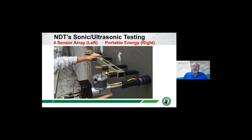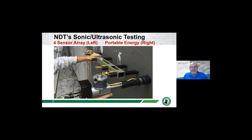NDT has sonic-ultrasonic equipment comprised of a portable energy source—an air gun that fires a special steel bearing hooked up to a tank of compressed nitrogen. That gun is shown on the right side of the photo. It's a very repeatable energy source: the same mass bearing and same pressure nitrogen tank. On the left is a four-sensor array. We need to know the distance of each array from the energy source. The distance between sensor A and B is six inches, B to C is 12 inches, and C to D is again 12 inches—giving us information over a 30-inch distance as the energy wave propagates from the source.